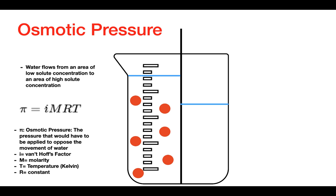The variable i is the van't Hoff factor — it simply states how many particles you get when a solute ionizes. For example, if you were to take sodium chloride and put it in water, the van't Hoff factor would be two, because you get two particles for every molecule of sodium chloride. The van't Hoff factor for glucose would be one, because glucose does not ionize in solution.